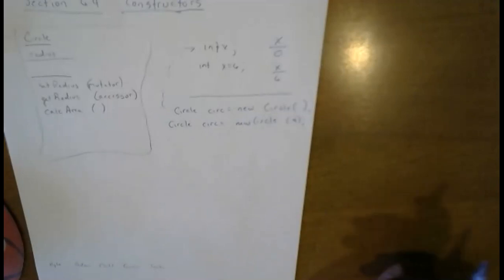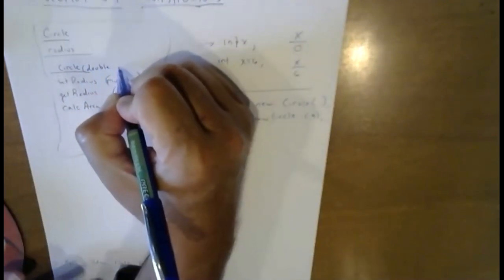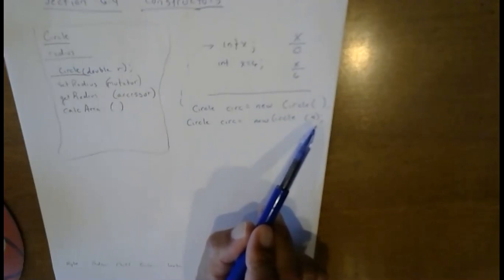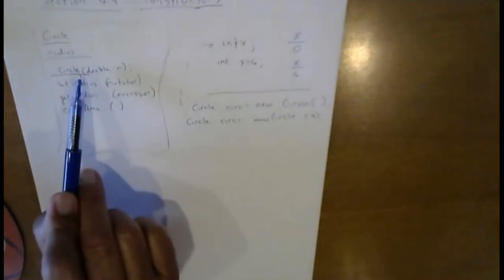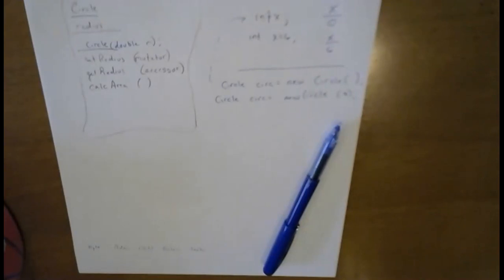To do that, I need to write a constructor. Back in the UML chart I'm going to include a method named Circle — the exact same name as the class — and it takes a double parameter I'll call r. That value r is going to be the 4 from when I instantiated the object. You've actually already seen this.